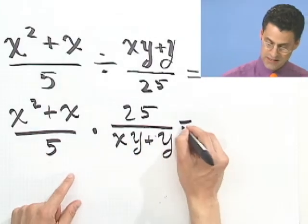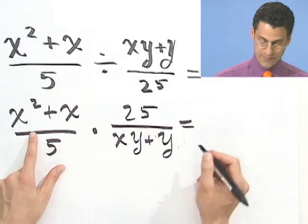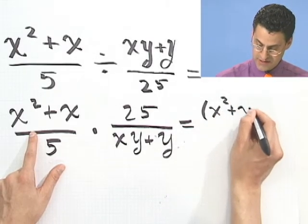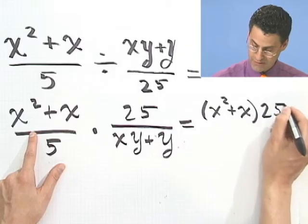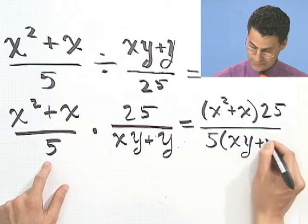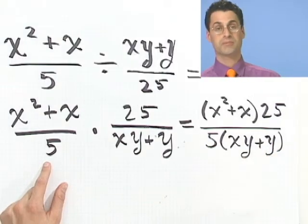And now I multiply like we just discussed, which is I just put everything together like that. And so, what I'd see here is x squared plus x. Look how I put parentheses around that, because everything has to hit the 25. And then everything has to hit the 5, so I'm left with this. 5 times xy plus y.